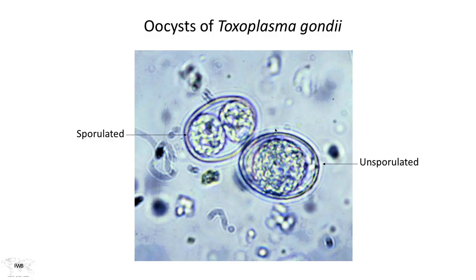Here's an example of an unsporulated and a sporulated oocyst, as you might expect to see in cat feces.